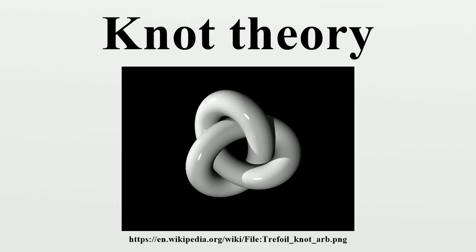A mathematical theory of knots was first developed in 1771 by Alexandre-Théophile Vandermonde, who explicitly noted the importance of topological features when discussing the properties of knots related to the geometry of position. Mathematical studies of knots began in the 19th century with Gauss, who defined the linking integral. In the 1860s, Lord Kelvin's theory that atoms were knots in the ether led to Peter Guthrie Tait's creation of the first knot tables for complete classification.